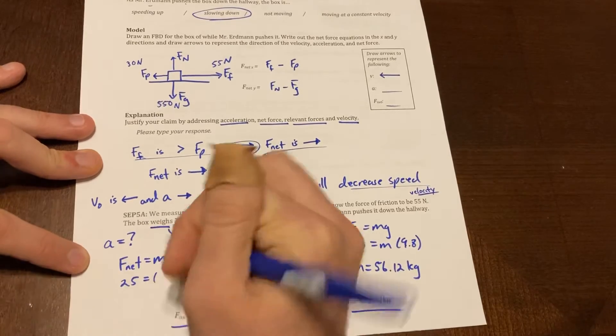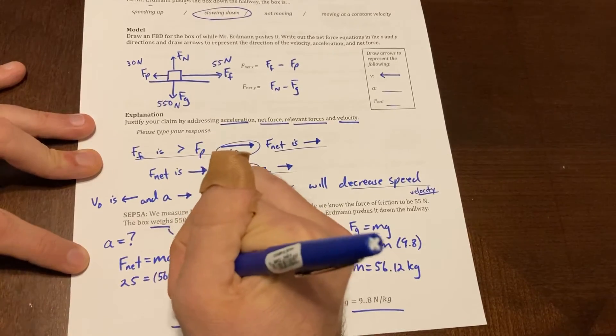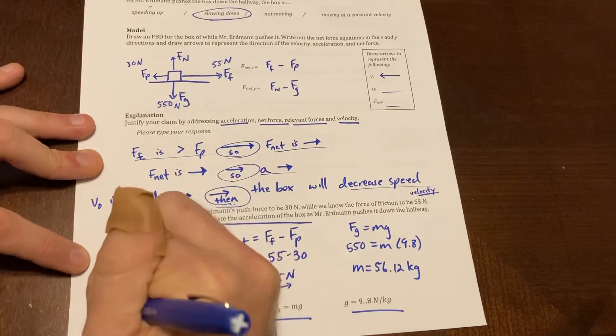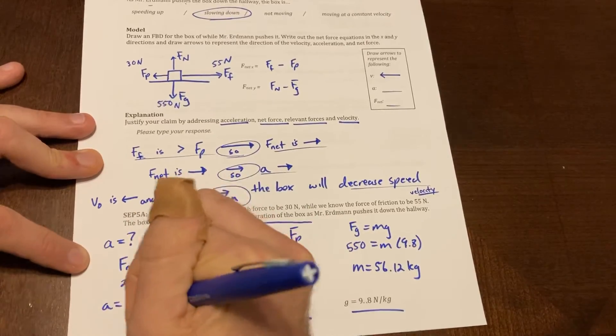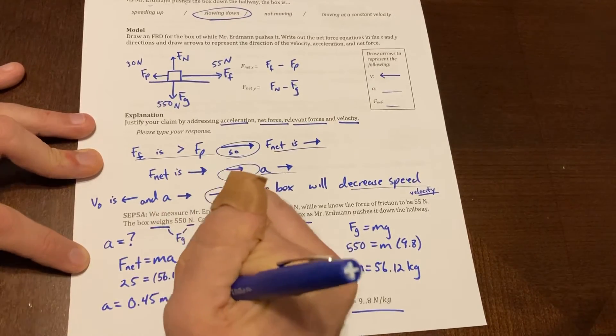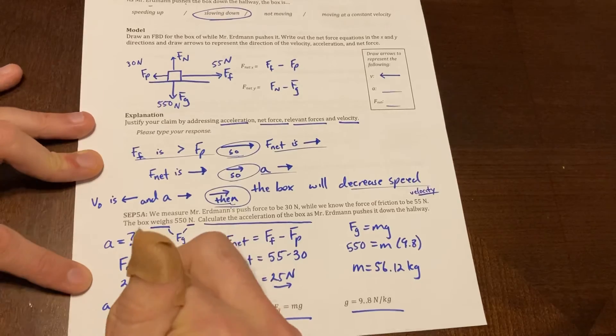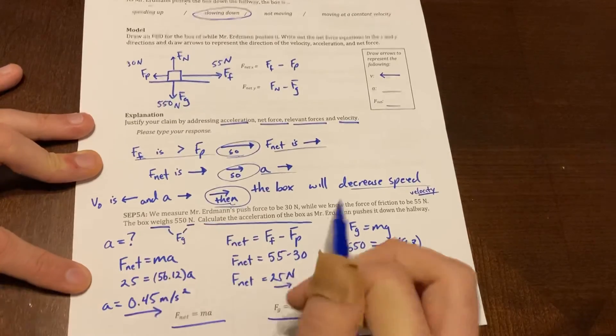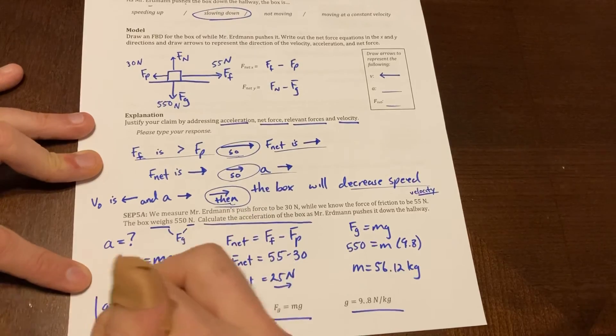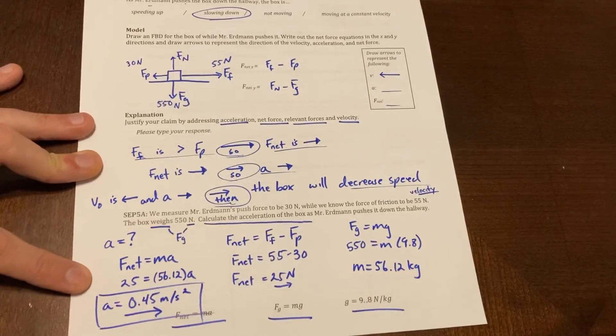So I could plug that in here for my mass, 56.12 kilograms, and then solve for acceleration. And when we do the math on this, we get acceleration to be 0.45 meters per second squared. Since it's a positive number, it's going to the right. And we know it should be going to the right here, because conceptually, going to the right because net force is to the right. There we go.